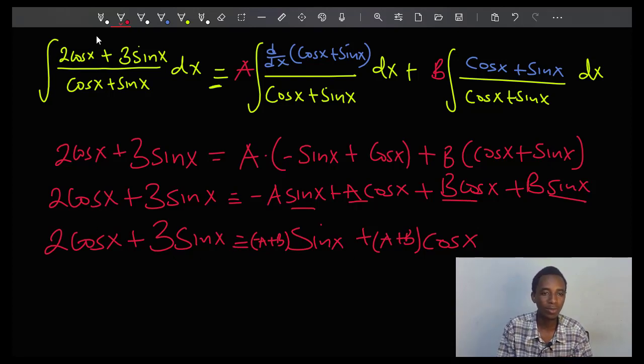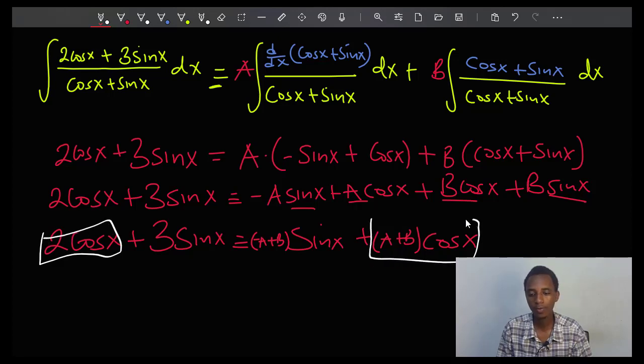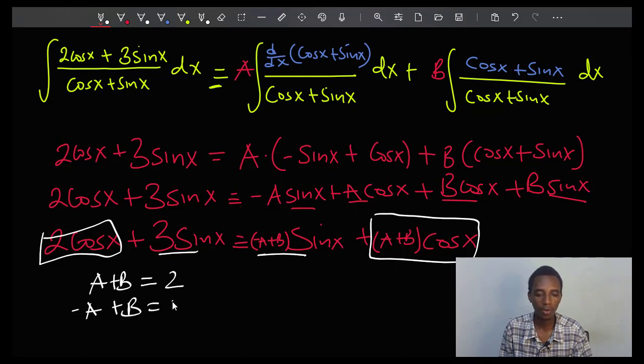So it turns out that this part here, the cosine part, should be equal to this part, and likewise this part should be equal to this part. So we'll have A plus B equals 2, and then we have negative A plus B equals 3. And of course from these two equations we can find the values of A and B.